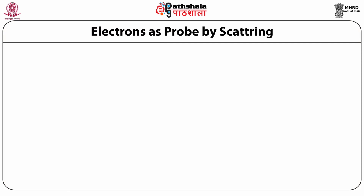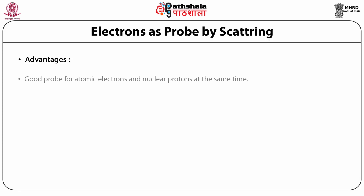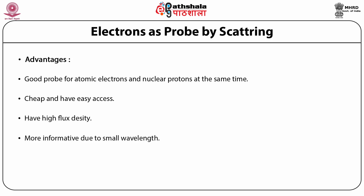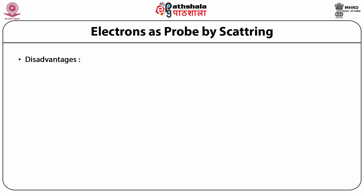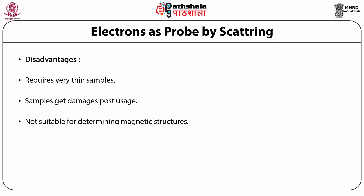Before discussing neutron scattering, let us compare the advantages of neutron scattering versus electron scattering. Electron as a probe has various advantages: it is a good probe for atomic electrons and nuclear protons, it is cheap and has easy access, has high flux density, and is more informative due to small wavelength. Disadvantages include requiring a very thin sample, sample damage after usage, and not being suitable for determining magnetic structure.